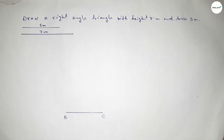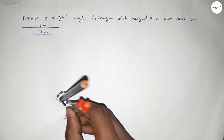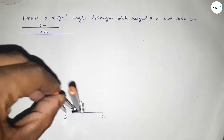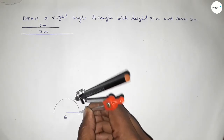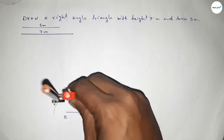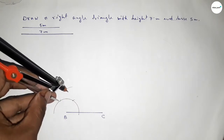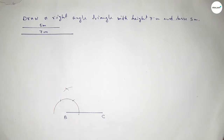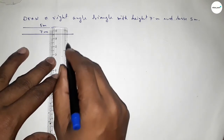Now we have to draw a 90 degree angle at point B. First, putting the compass on point B and drawing an arc. Then putting the compass at that point and cutting here, and putting the compass again and cutting again. Drawing another arc with the same length and placing the compass to cut, so both curves intersect at a point.